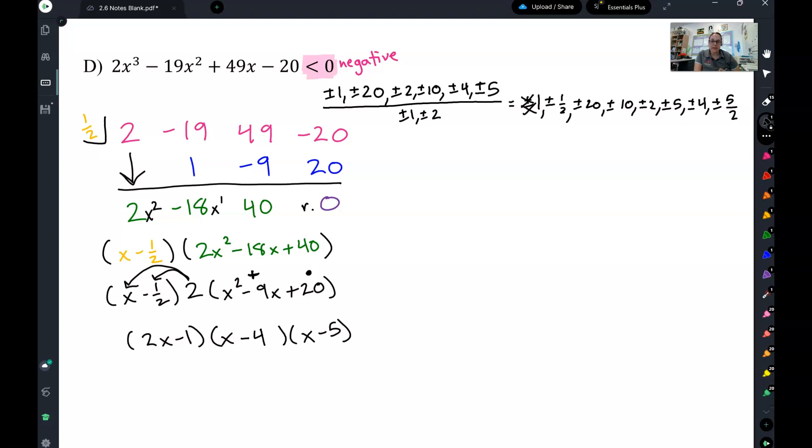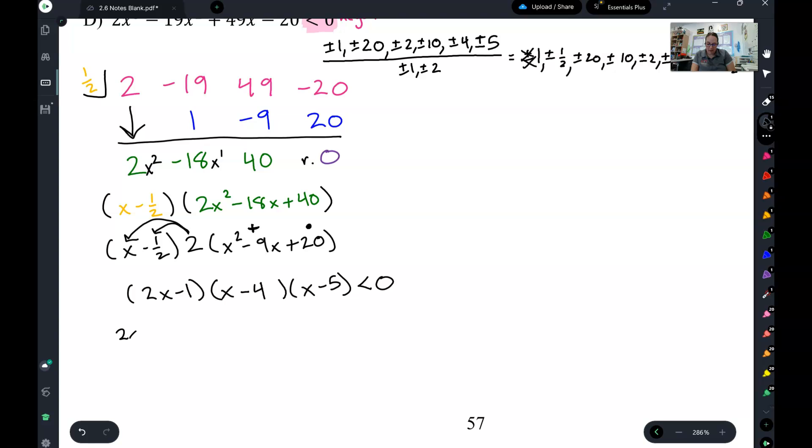So step 3, factor check. I still have my less than 0. So now step 4 is to get my x intercepts. So set each factor equal to 0. And I get x equals 1 half, x equals 4, and x equals 5.